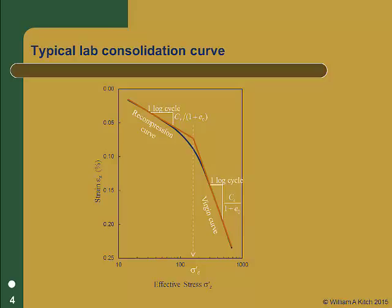However, that is not necessarily the case. All lab consolidation curves show a recompression and a virgin curve, and laboratory samples are always over consolidated. But that does not necessarily mean that the soil in the field will be over consolidated. To determine if the soil in the field is over consolidated, we must look at both field and lab data together.